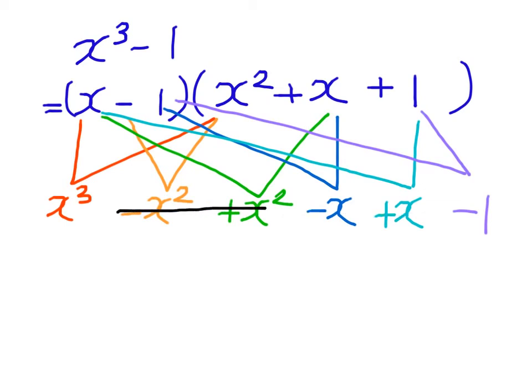So after removing these middle terms, we arrive at our answer, which is x³ - 1. Therefore, we can realize that x³ - 1 can be factorized into (x - 1)(x² + x + 1).